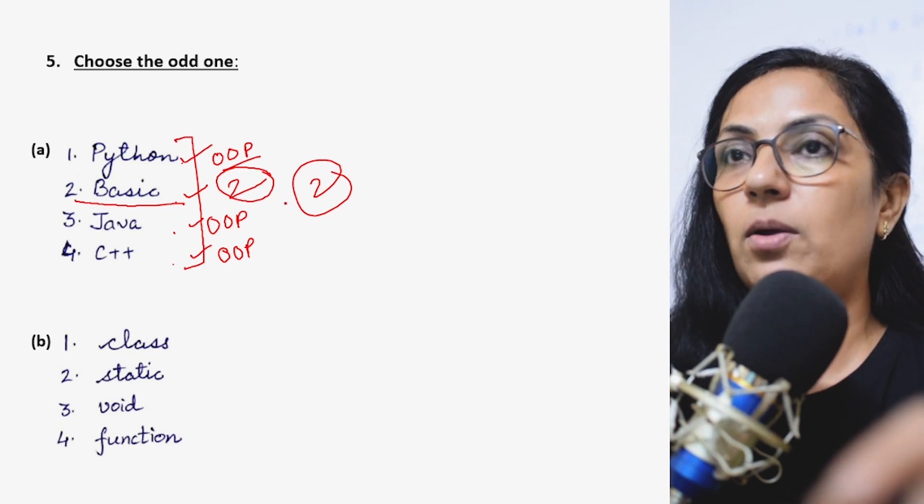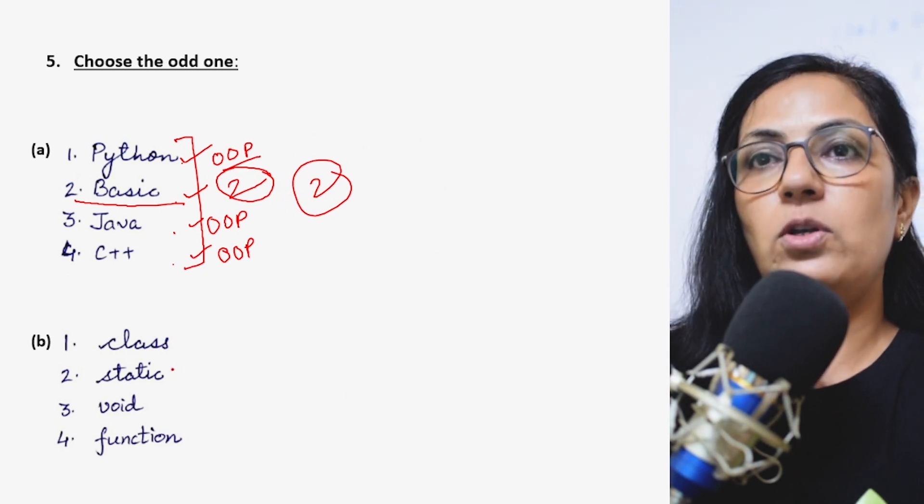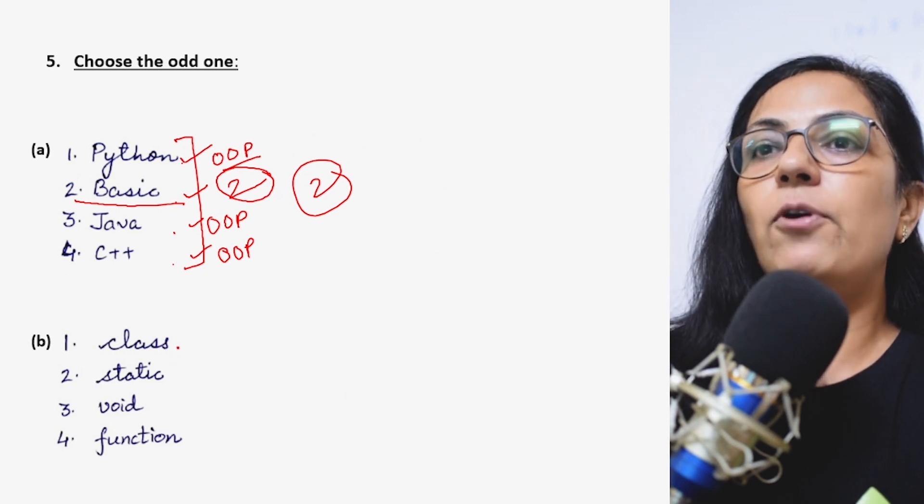So Basic is left which is not object-oriented principle language. So we have option 2 as the correct answer. Rest all are object-oriented programming languages.